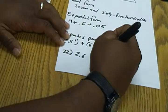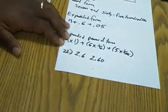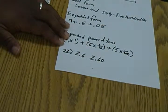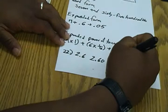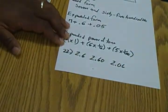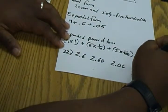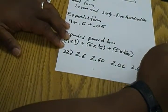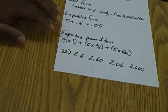They have 2.60, which is 2 and 60 hundredths. They have 2.06, which is 2 and 6 hundredths. And then the last one that they have is 2.600, 2 and 600 thousandths.